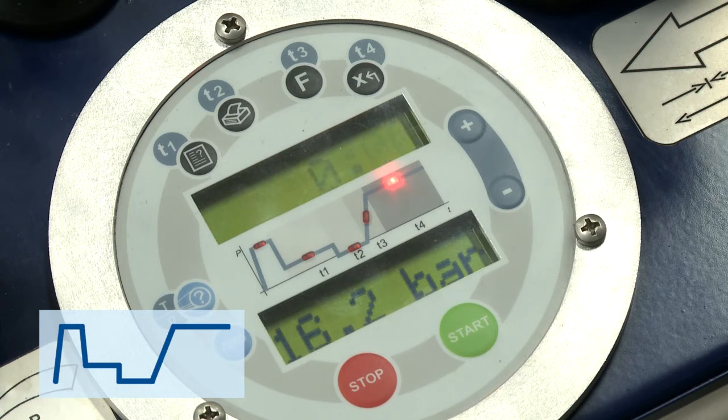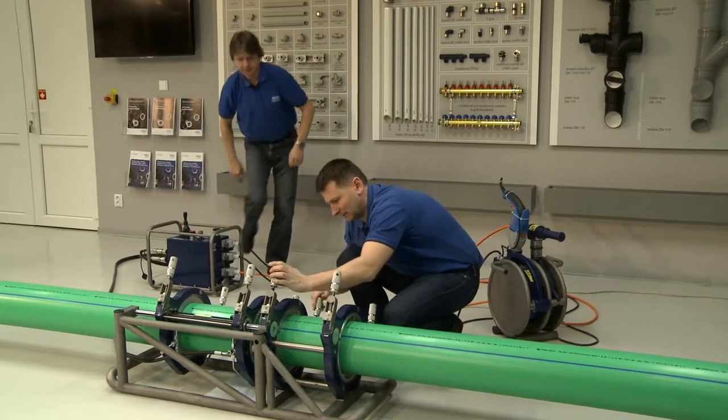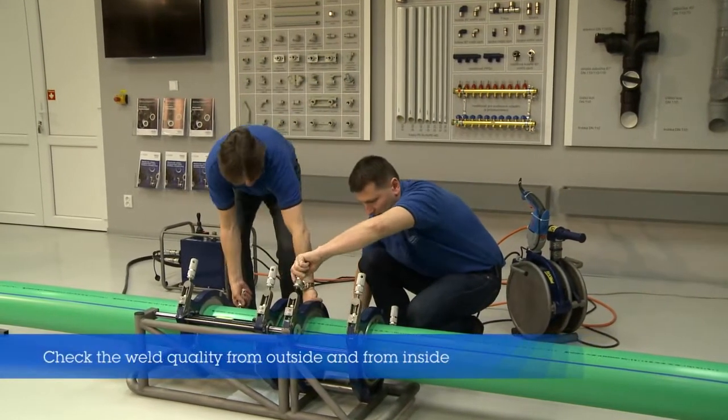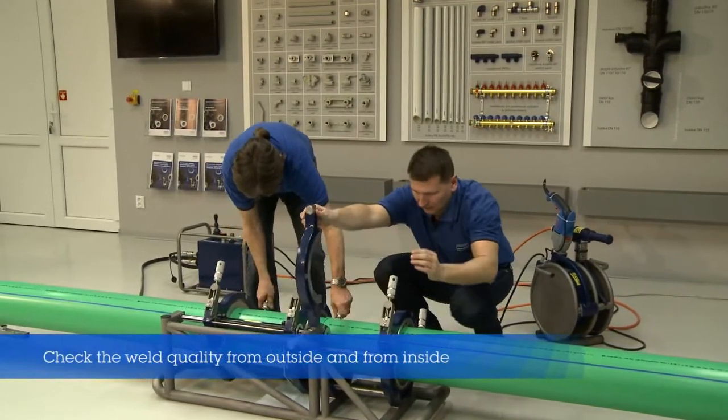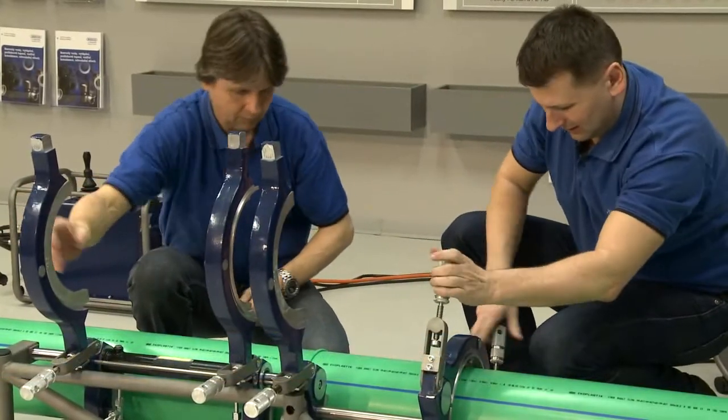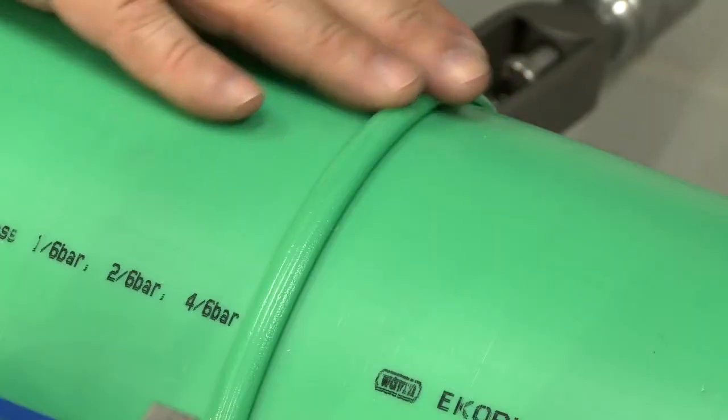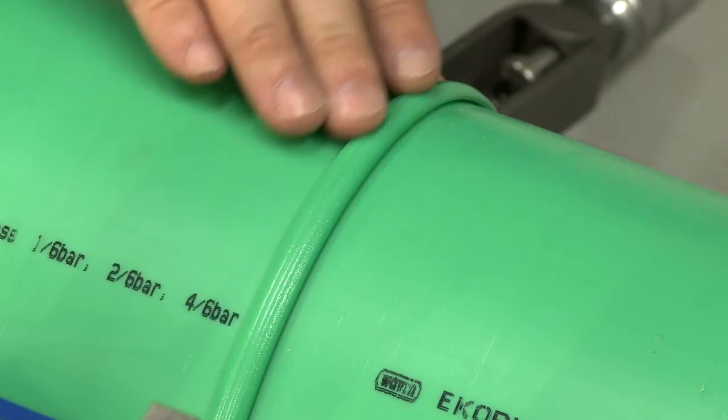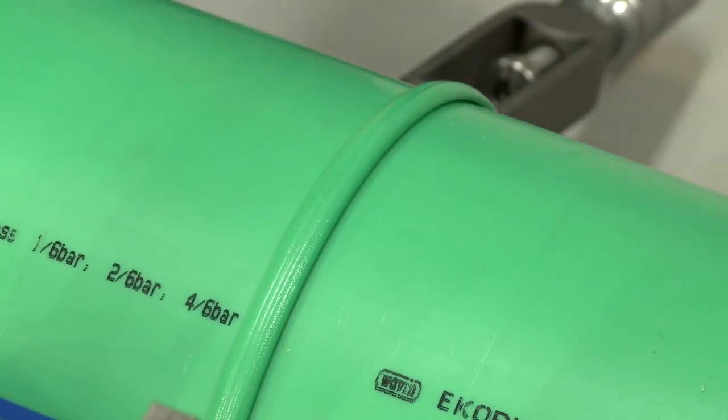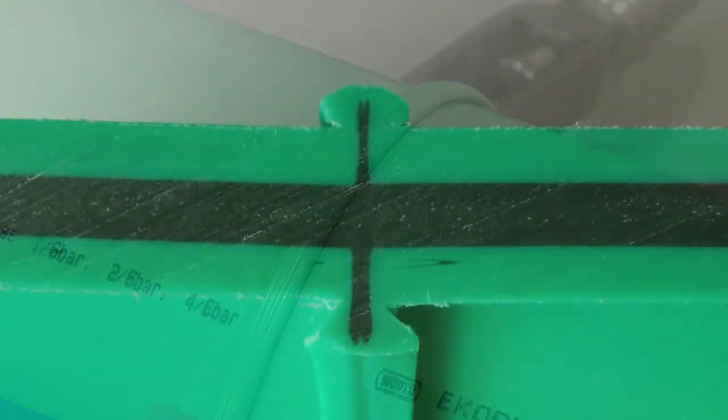After the cooling period is ended, the weld is done. Release the pressure from the hydraulics and remove the pipes from the welding fixture. Check the weld quality both from the inside and outside. If you have followed the recommended procedure, you now have a quality weld of two large diameter Wavin Ecoplastic pipes.